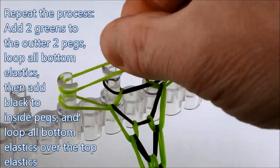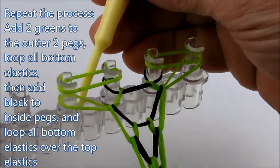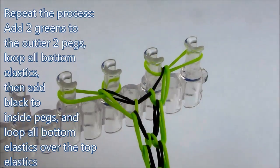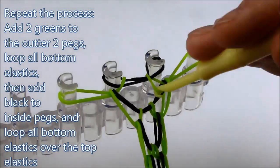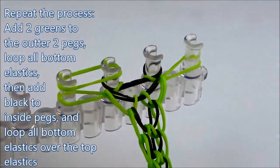So anytime you place a new elastic on, you loop any elastics that are on that peg so that there's always one elastic on each peg once you've finished looping.